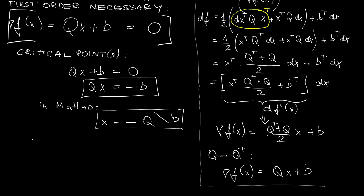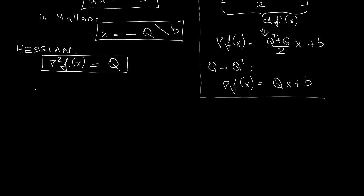The second-order necessary and sufficient conditions are given by the Hessian, which in this case is matrix Q. Depending on whether this matrix is positive definite, positive semi-definite, indefinite, or singular,